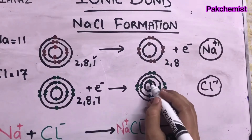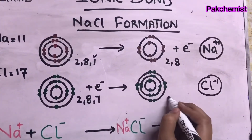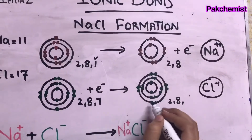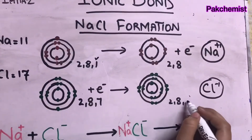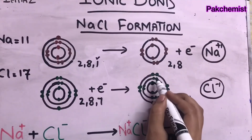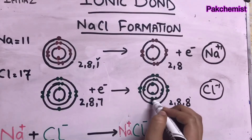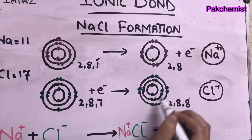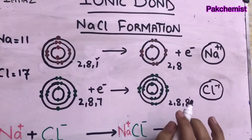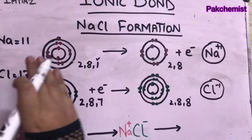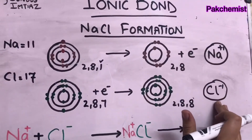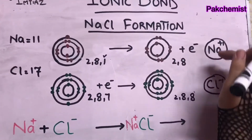After gaining one electron, you can count: the first shell has 2 electrons, the second shell has 8, and the last shell now has 8 electrons — giving a total of 18 electrons. So 2 plus 8 plus 8 equals 18. Na forms the cation and Cl forms the anion.